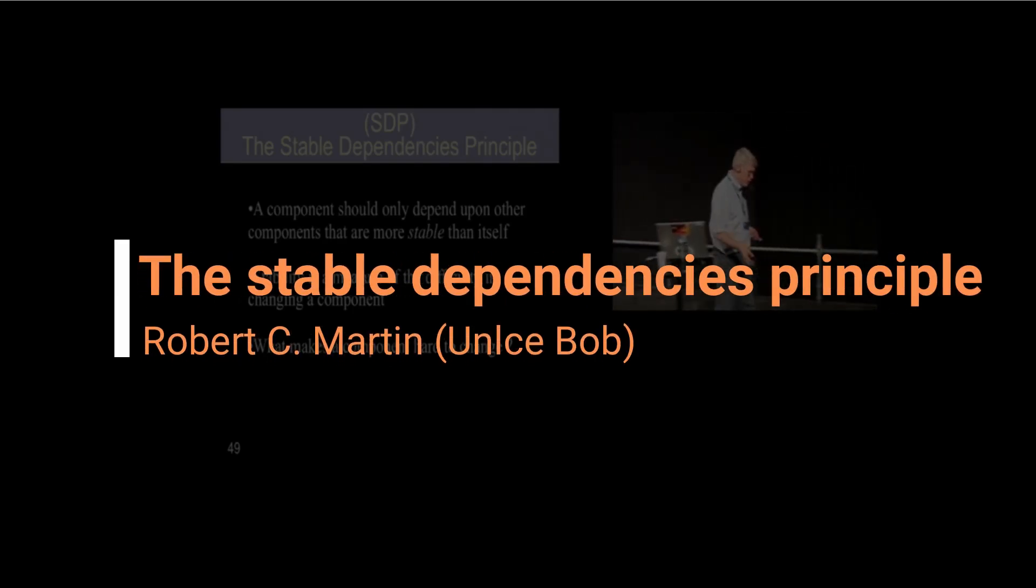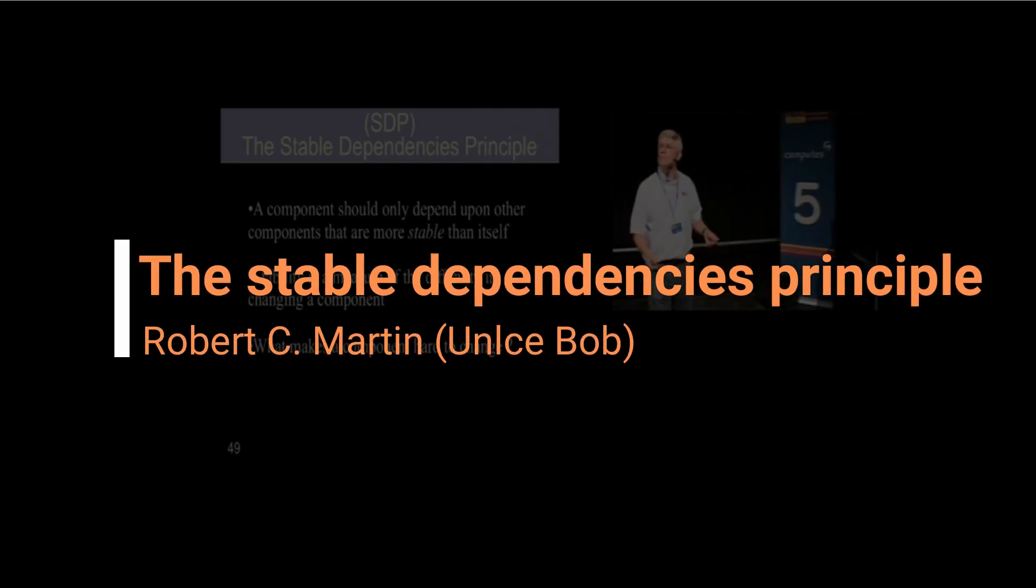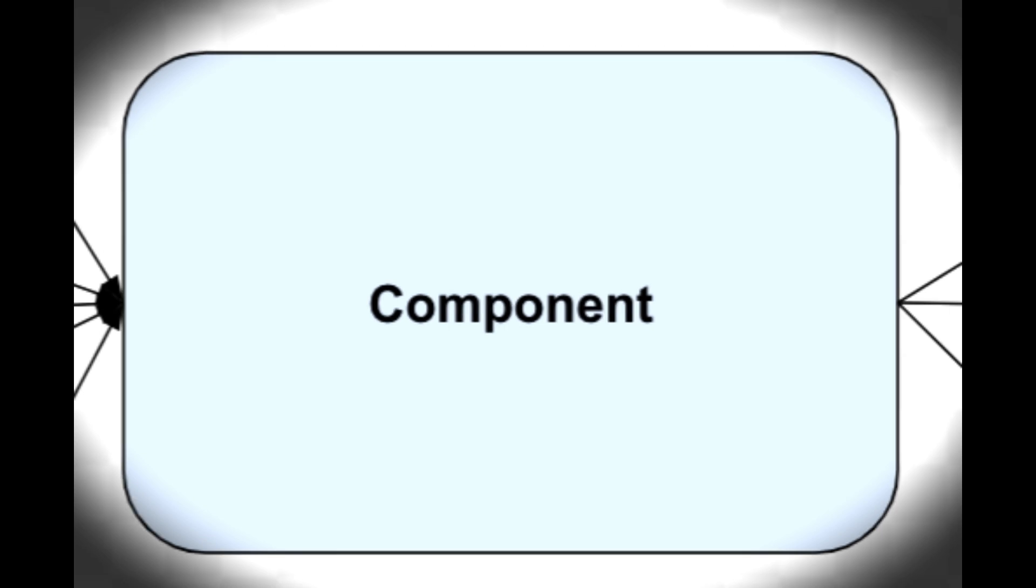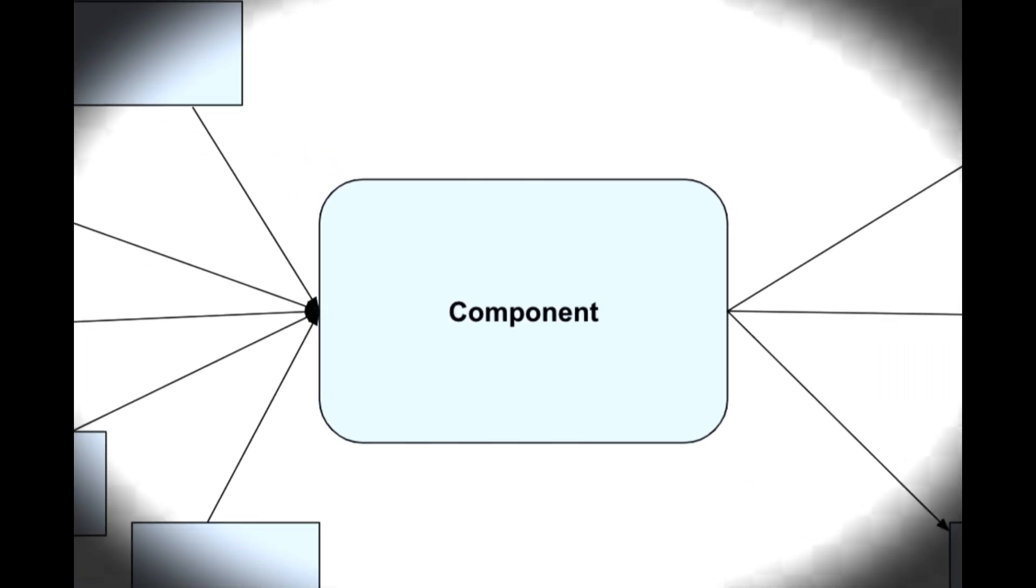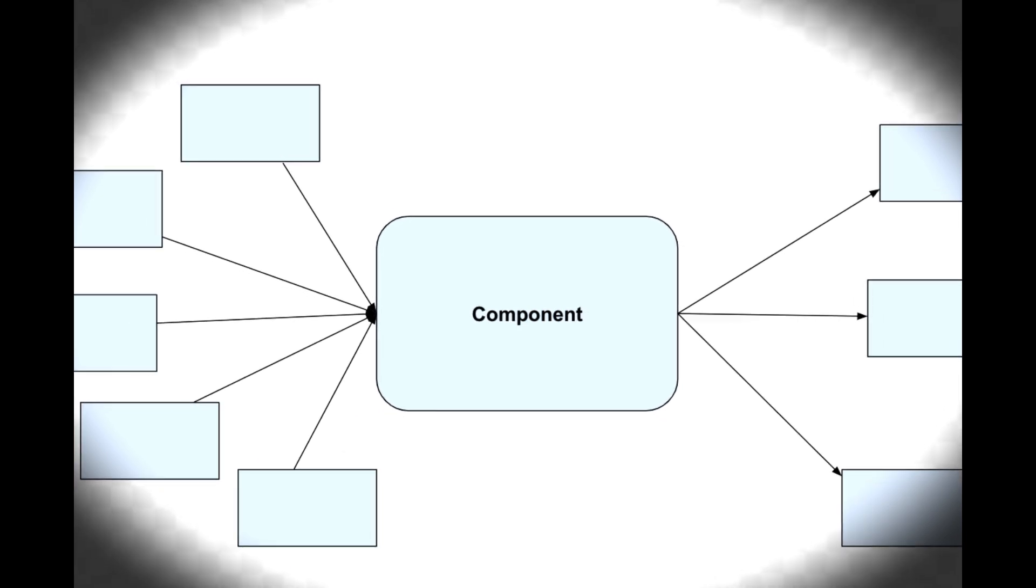What is it that makes a component hard to change? Dependencies. The number of incoming dependencies to a component, the number of other components that depend upon it, make that component hard to change.